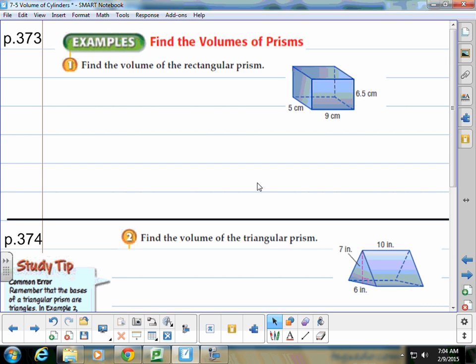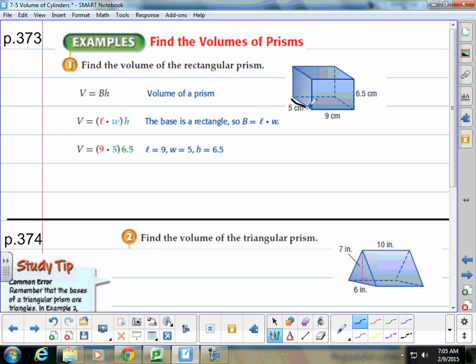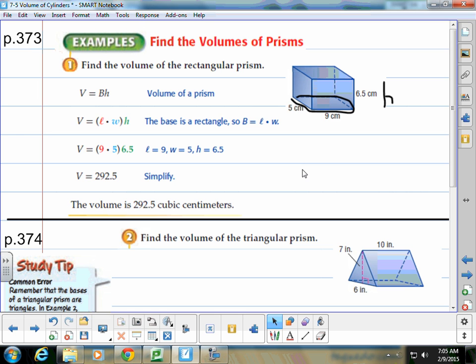So to find the volume of the rectangular prism, we have to decide what our base is. We're going to use the formula base times height. Notice that the base is a rectangle, so we use length times width to fill in there, and then times height. We fill in this part of the rectangle here as our base, 9 times 5, then times that height of 6-and-a-half centimeters. Work that out, and you get the volume is 292-and-a-half cubic centimeters.